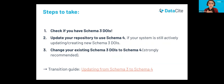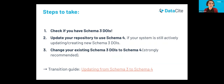If you're a DataCite member or consortium organization, there are three steps we're asking you to take. First, check if you've got schema 3 DOIs. Then, if your system is still actively updating or creating new schema 3 DOIs, you'll need to update your repository to use schema 4 going forward. Finally, we recommend that you change your existing schema 3 DOIs to use schema 4. We've published a transition guide on our support site with more detail. Please review this guide and share it with other staff, including technical staff who will be making these changes, and reach out to us for support with any questions.